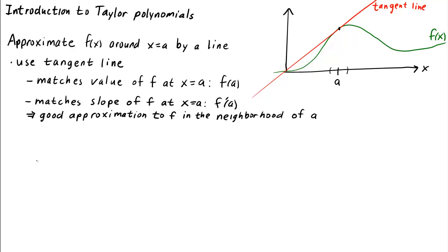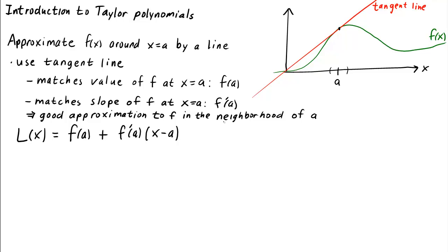So therefore it's a good approximation to f in the neighborhood of a. The formula for the tangent line, if we write it as a function, is l of x equals f of a plus the slope f prime of a times x minus a. Sometimes we write it as y equals f of a plus f prime of a times x minus a — it's the same thing — but here we want to use the function notation l of x.